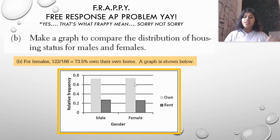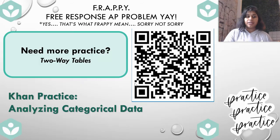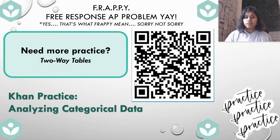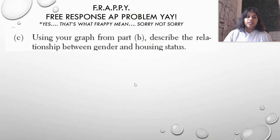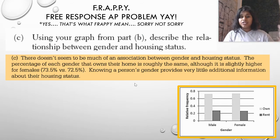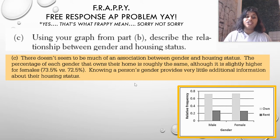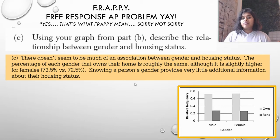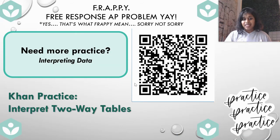Comparing housing status for males and females, males who own and females who own look about similar, and males who rent and females who rent also look about similar. The written description: there doesn't seem to be much of an association between gender and housing status. The percentage of each gender that owns their home is roughly the same, although slightly higher for females — 73.5% versus 72.5%. Knowing a person's gender provides very little additional information about their housing status.